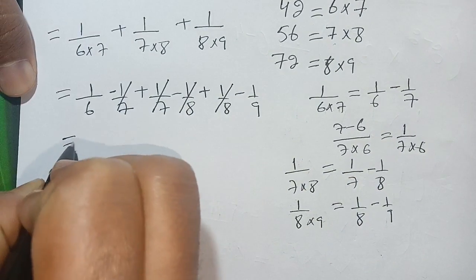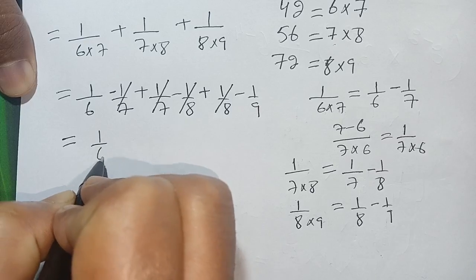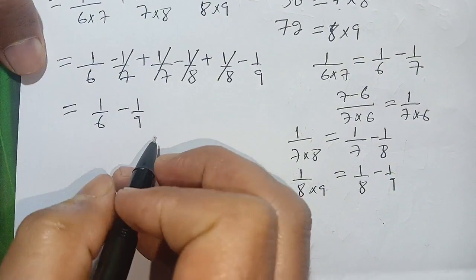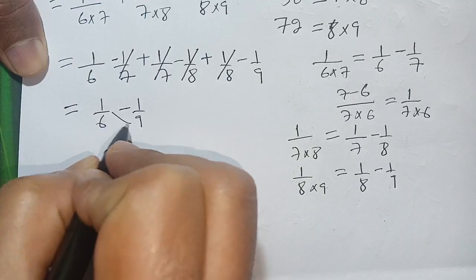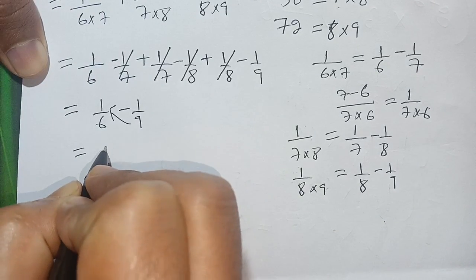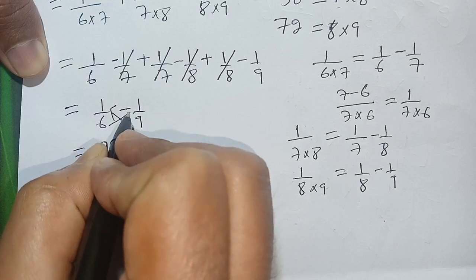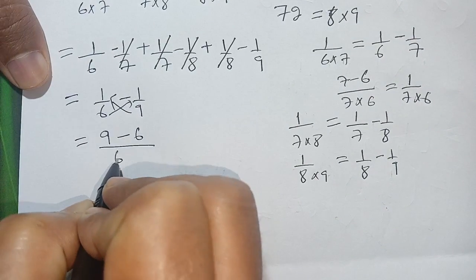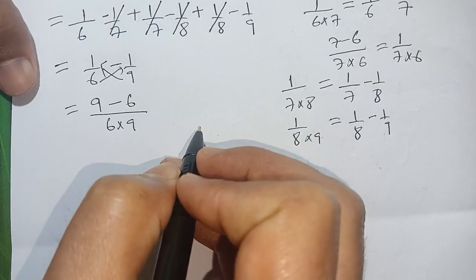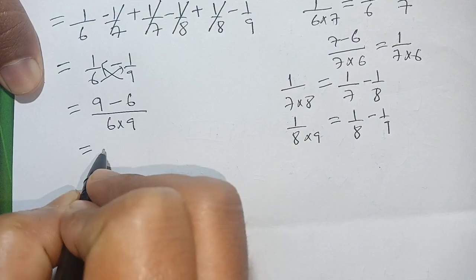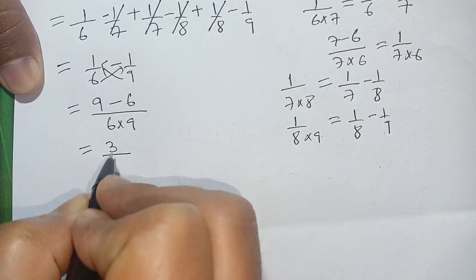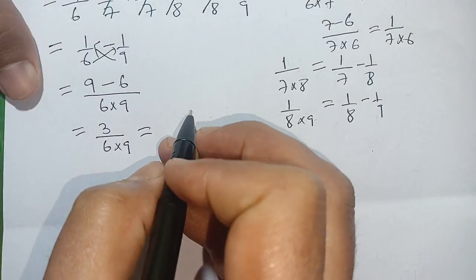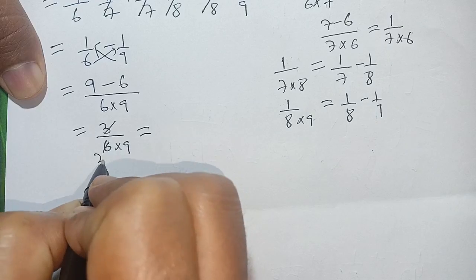Our remaining terms are 1 divided by 6 minus 1 divided by 9. Cross multiplying: 9 times 1 gives 9, minus 6 times 1 gives 6, all divided by 6 times 9. So we have 9 minus 6 equals 3, divided by 6 times 9 equals 54.